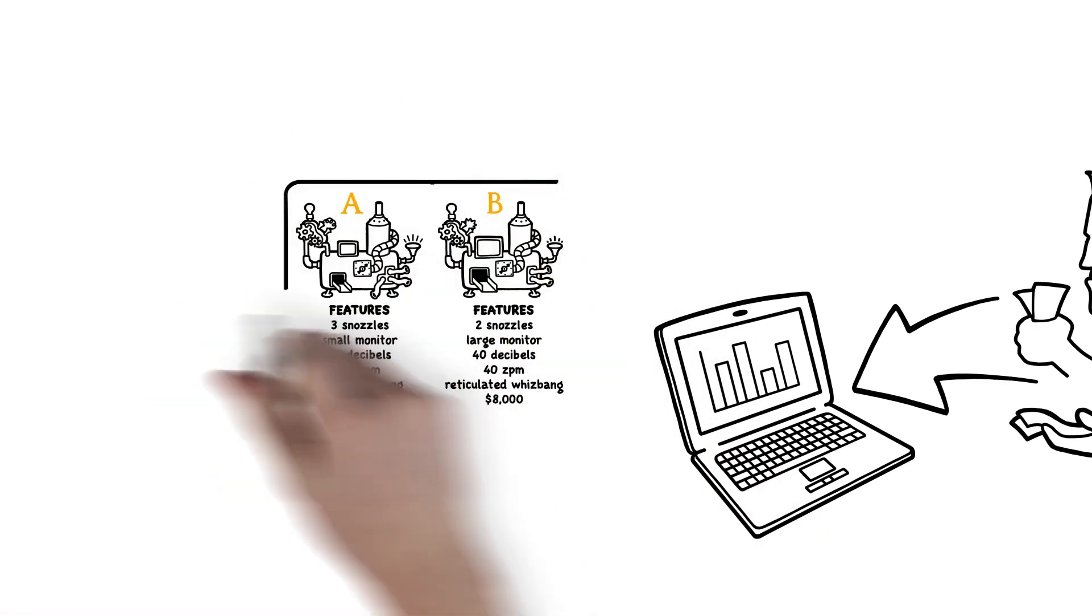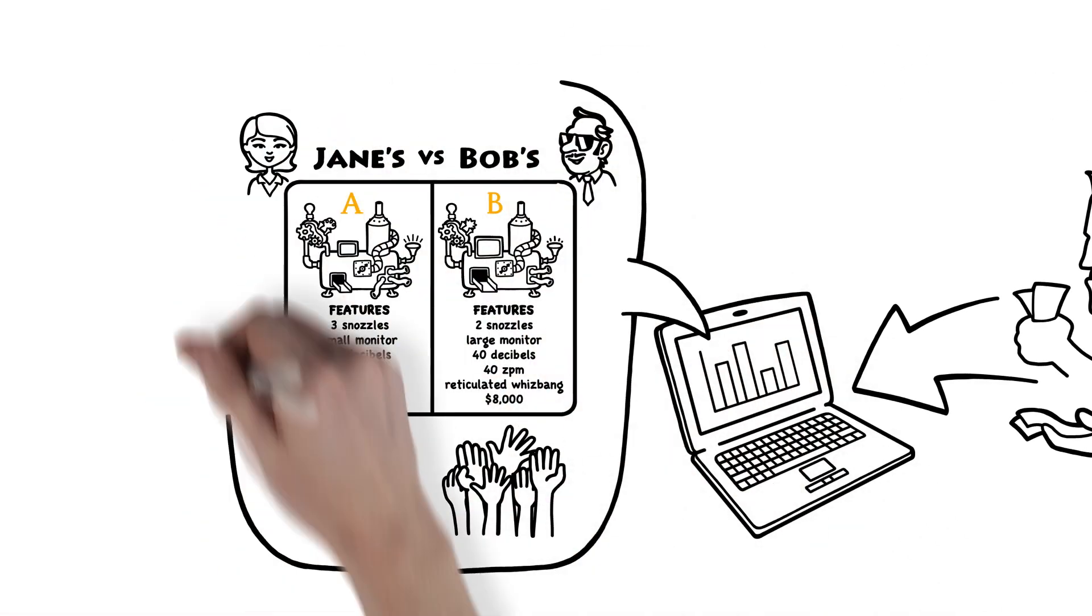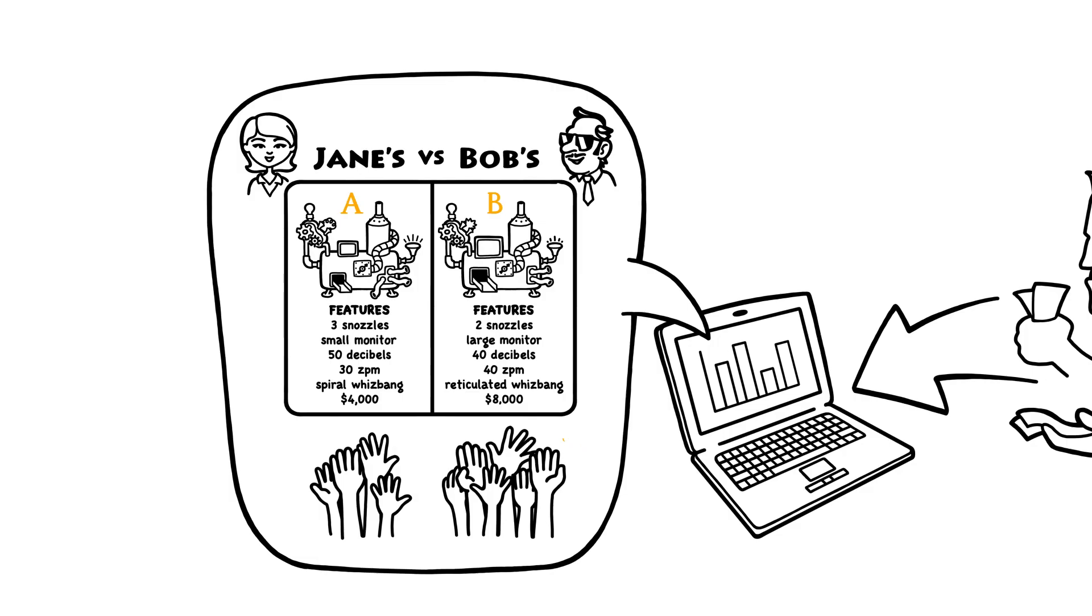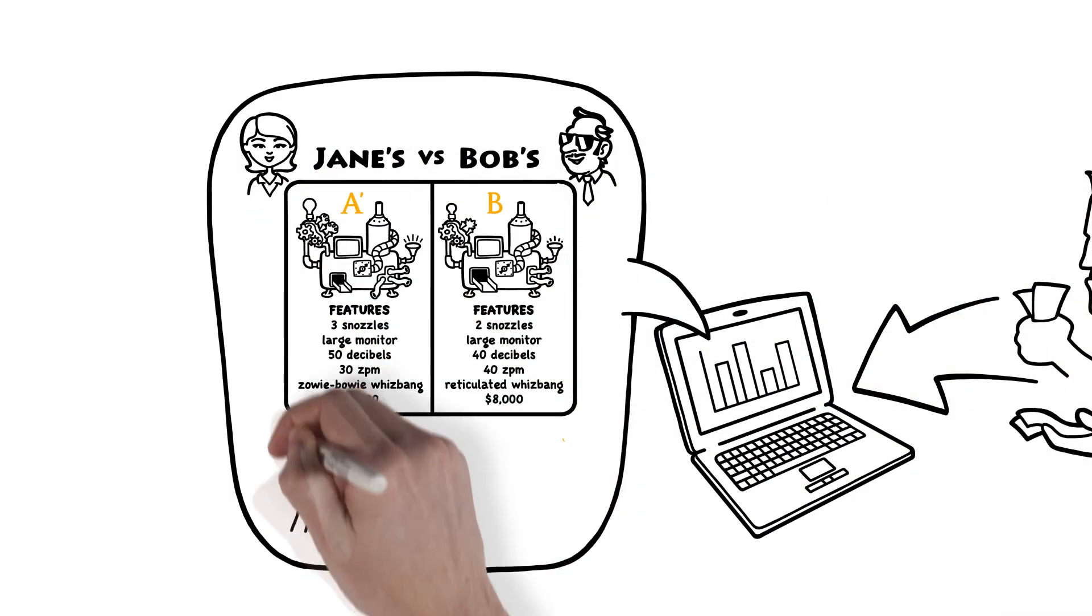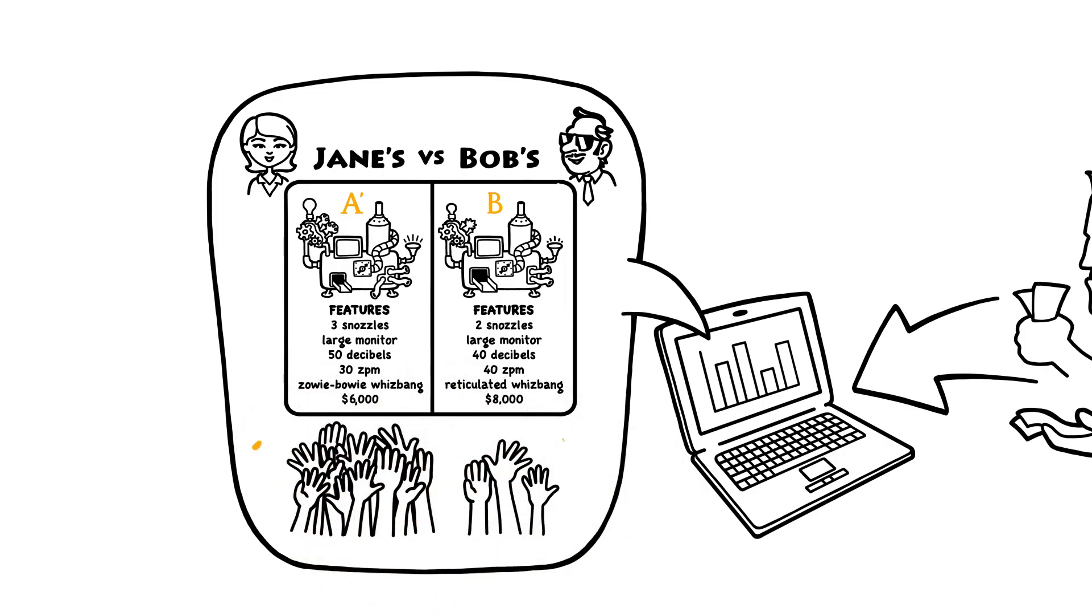She's now got a what-if market simulator that acts like a voting machine for bazoogles. She can specify any of thousands of potential bazoogles in her conjoint analysis software and the virtual consumers will vote on those potential bazoogles versus her competitors.